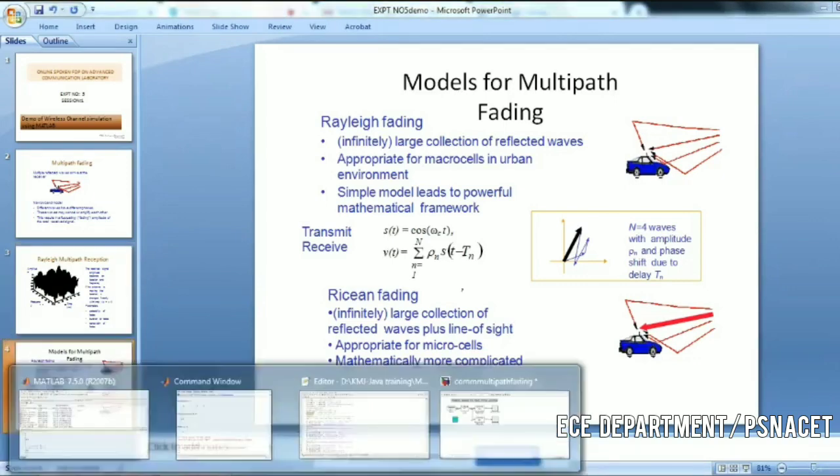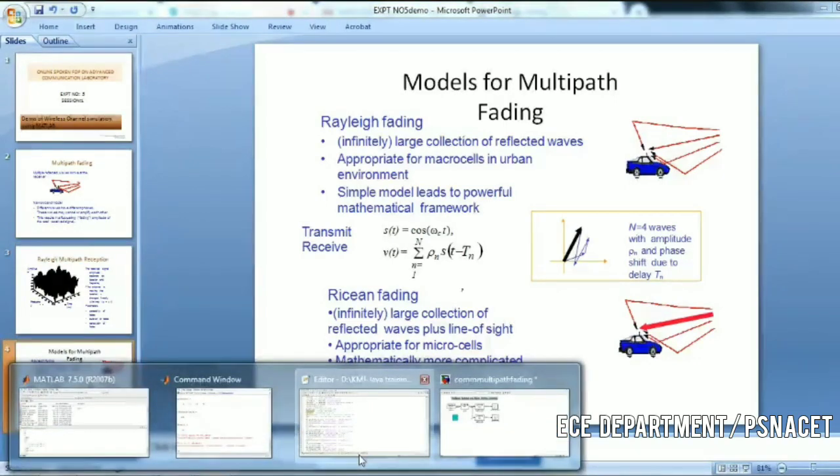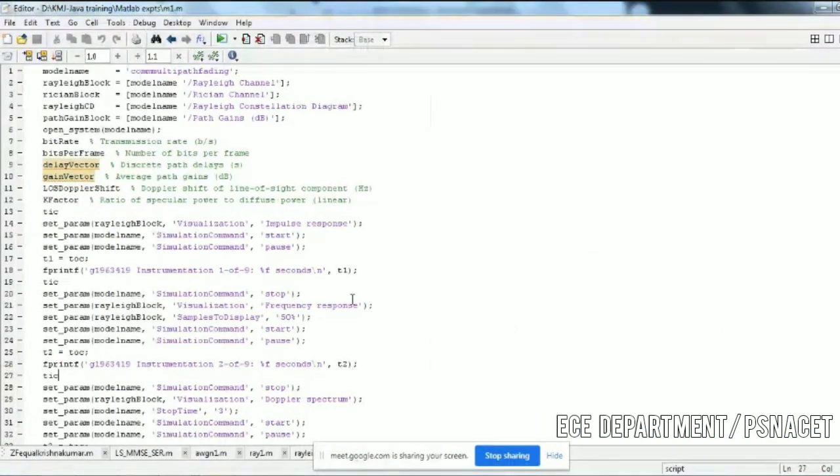Regarding the MATLAB code, we are generating the Simulink model to see the scatter plot of the Rayleigh distribution and Rician distribution. We are generating the MATLAB code for this.